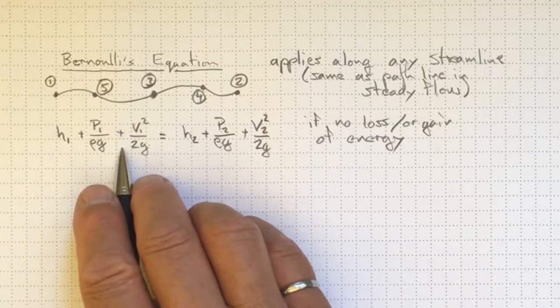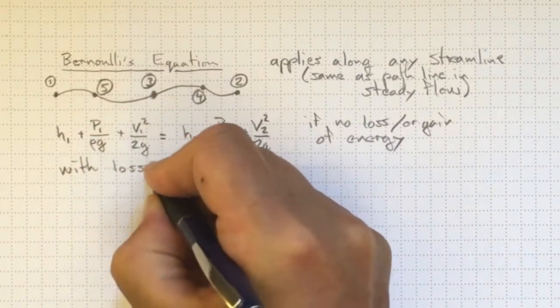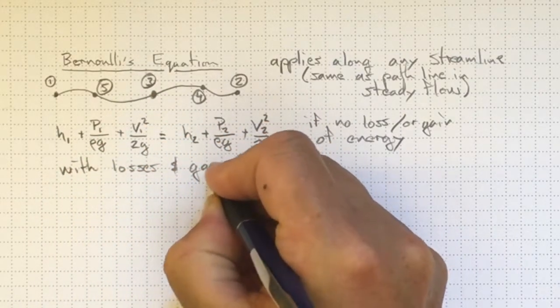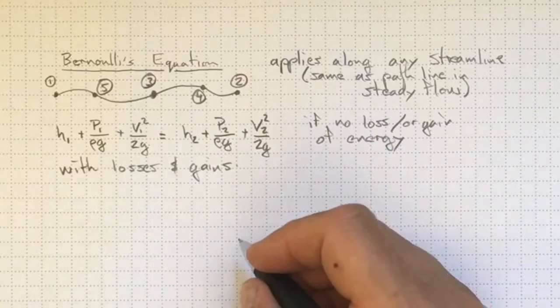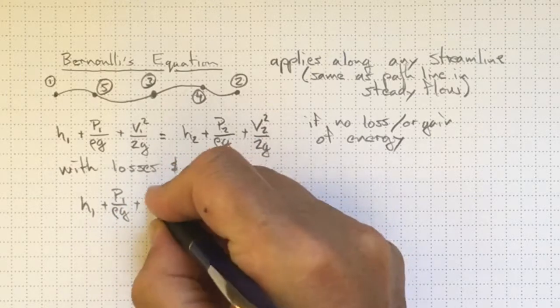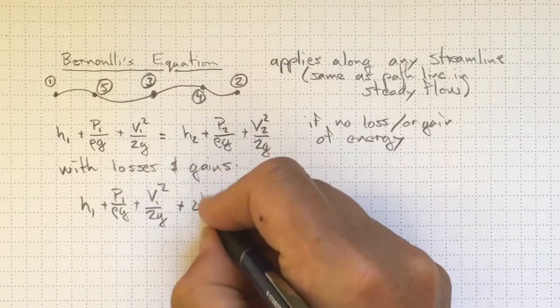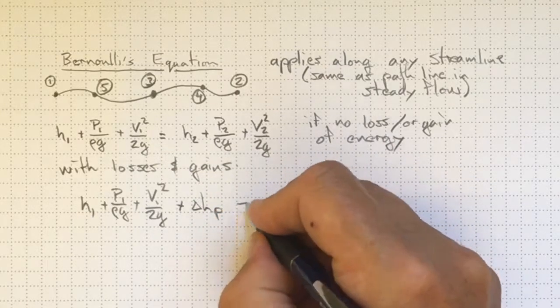In the real world, we will have losses and gains in energy. In that case, we'll have the total energy at location 1 plus any energy that we added, typically from a pump, will be equal to the total energy we've got at 2.